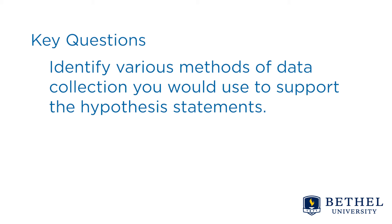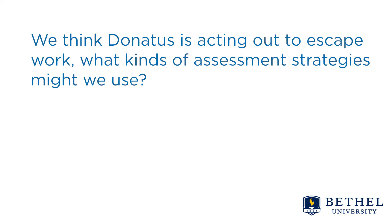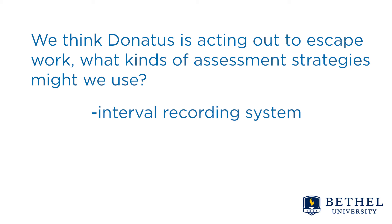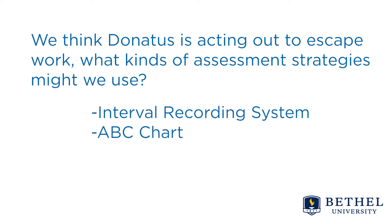The next question asks us to identify various methods of data collection to support the hypothesis statement. If we think Donatus is acting out to escape work, what assessment strategies might we use? For on-task versus off-task engagement, we want to use the interval recording system — in a particular hour-long setting, how much of that time is he off task, bothering neighbors, or playing with pencils? For meltdowns, we would probably use the ABC chart, recording the antecedent — what's happening right before the meltdown — the behavior itself described carefully, and what consequence is maintaining it.